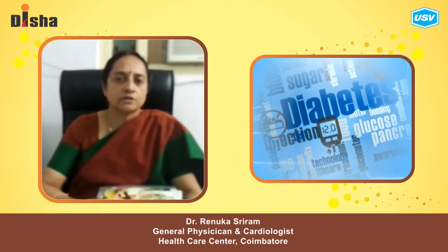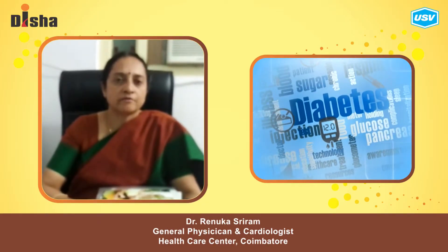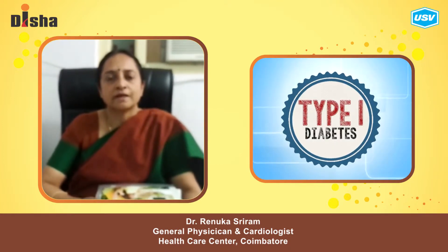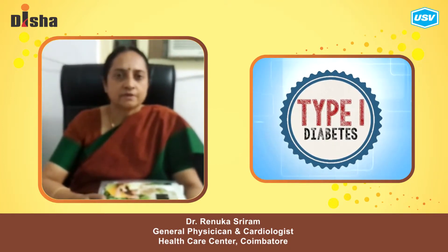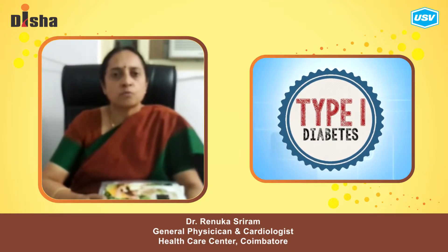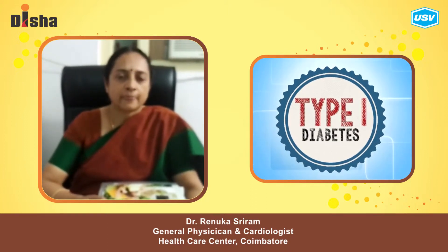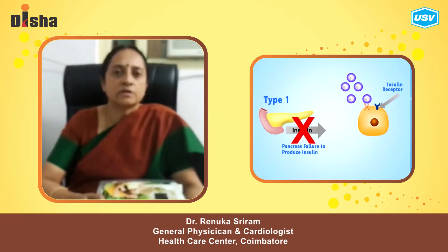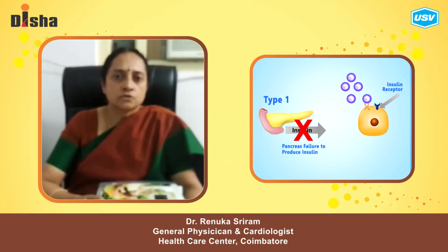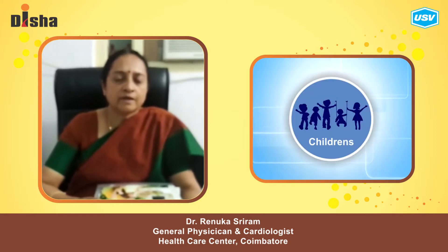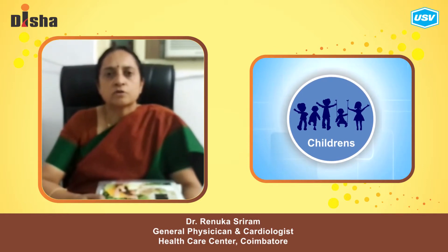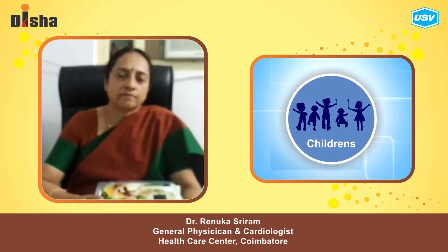Today I will be talking about different types of diabetes. The first type is type 1 diabetes, also called type 1 diabetes mellitus. This occurs because of a total lack of insulin in the body. Very young people and children get diabetes because of no insulin at all in the body.